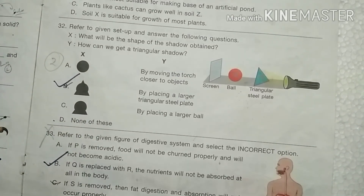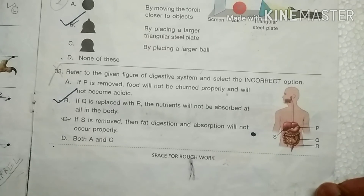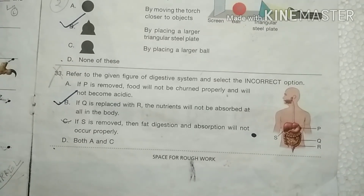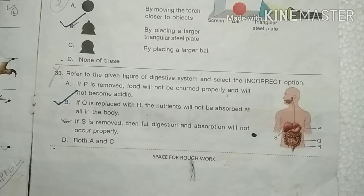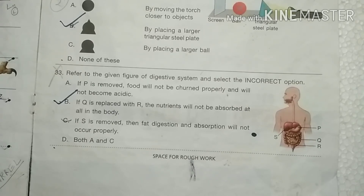Question number 33: Refer to the given figure of the digestive system and select the incorrect option. To know more about the digestive system, watch our previous video. The correct answer is B — if Q is replaced with R, nutrients will not be able to be absorbed at all in the body.